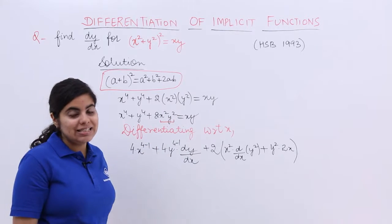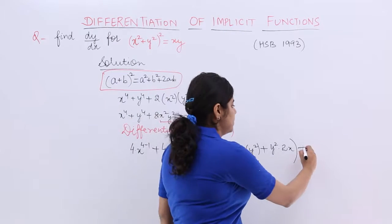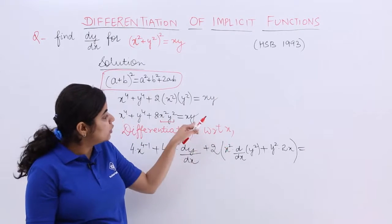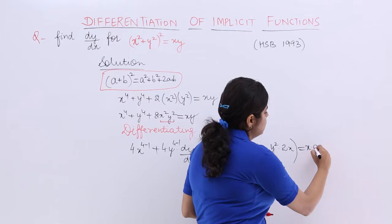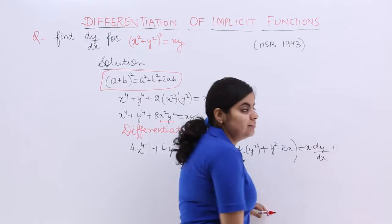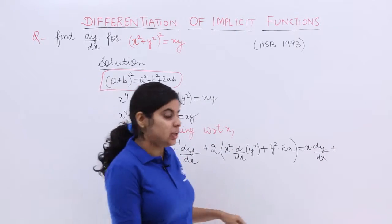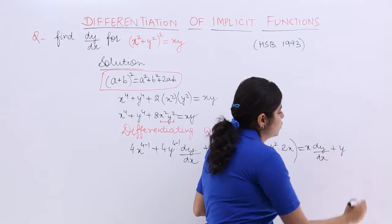Right hand side is xy. Now xy in the right hand side means what? It means that again you have to apply the product rule. So it becomes 1st term into differentiation of 2nd, plus 2nd term into differentiation of 1st.